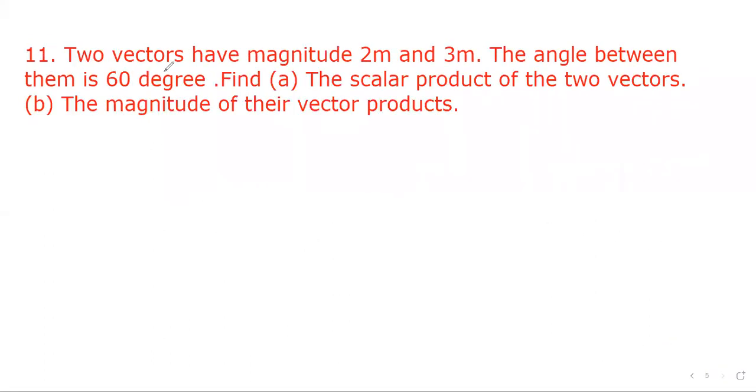Let's go to the next question. Question number 11 says two vectors have magnitude 2 meters and 3 meters. The angle between them is 60 degrees. Find the scalar product of two vectors. So scalar product is given by vector A dot vector B equal to modulus A modulus B cos theta. So we have to find out A dot B. So 2 into 3 into cos 60. Cos 60 is 1 by 2. So answer is 3 units or 3 meters.